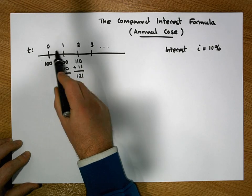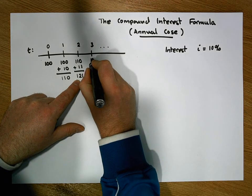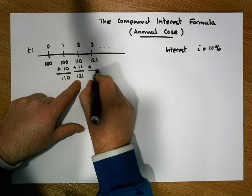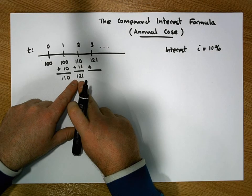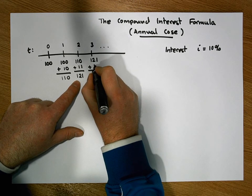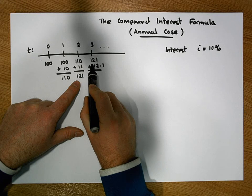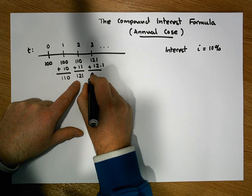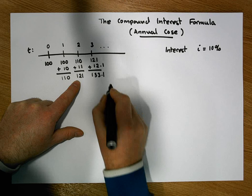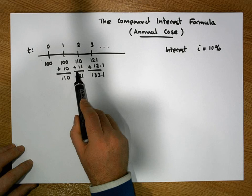Continuing in this fashion, after three years has elapsed what we should have in the account is what we had in the previous year — 121 euros — plus a reward for that investment, which is 12 euros and 10 cent, giving us a total of 143 euros and 10 cent. We continue in this fashion accumulating interest on top of interest.